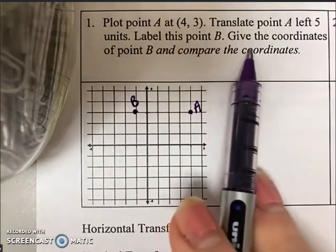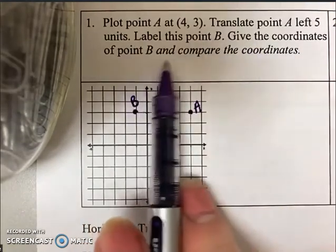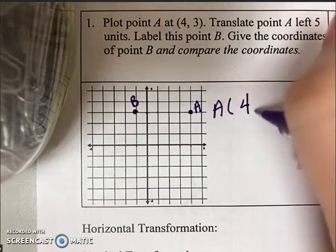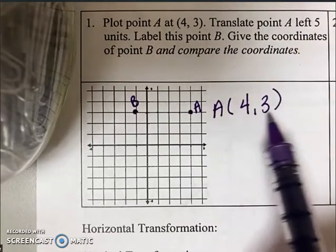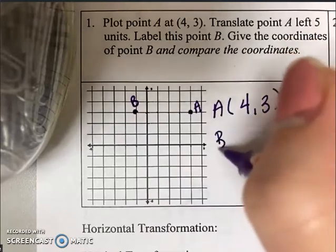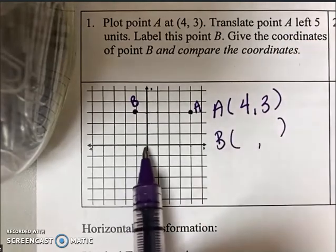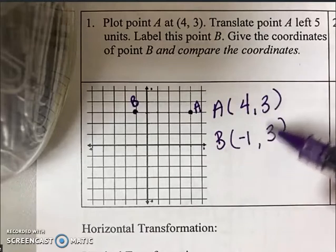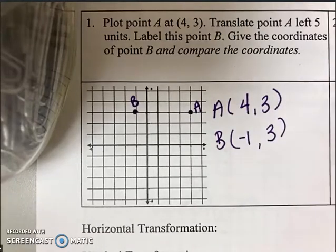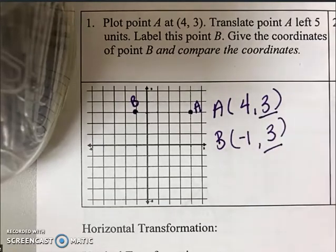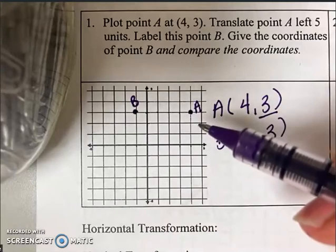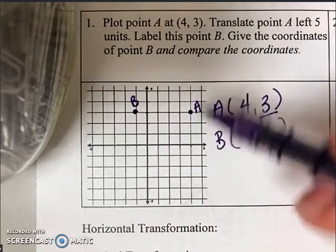Now it says give the coordinates of point B and compare the coordinates. We have point A, which is (4, 3), and point B, which is located at (-1, 3). If I compare these coordinates, I notice that the Y values are the same—three and three. Why is that? The Y values are the same because I didn't move it up or down at all.